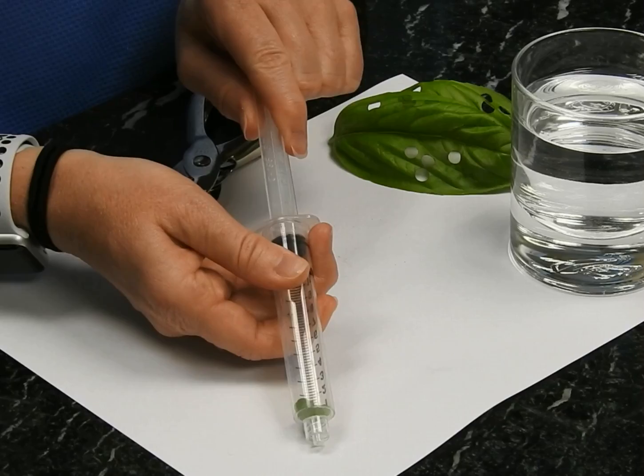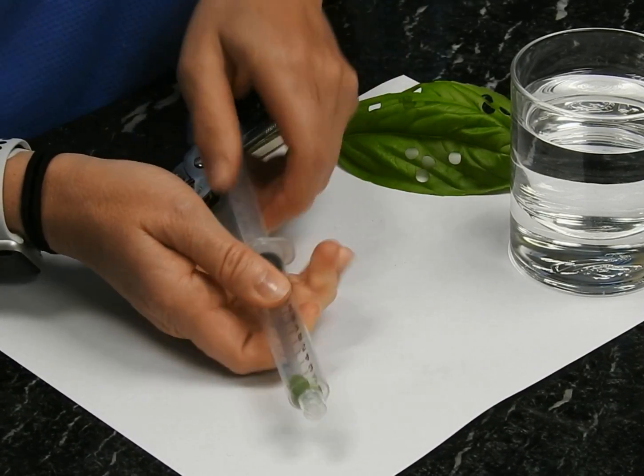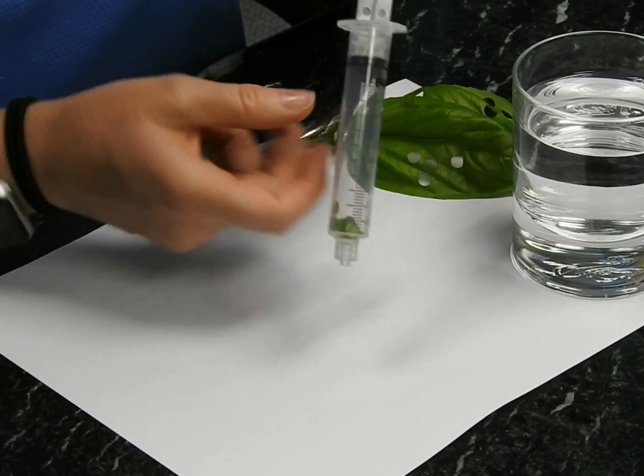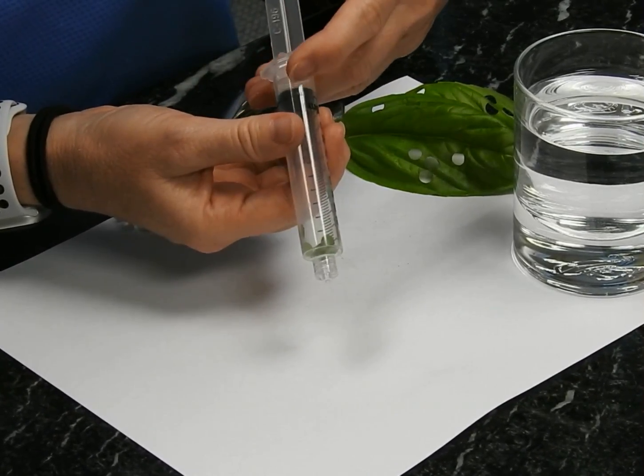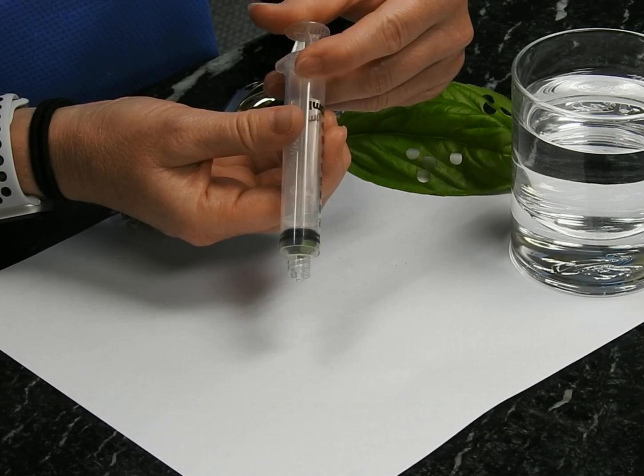Then insert the plunger and squeeze out as much air as you can, being careful not to smash your disks.